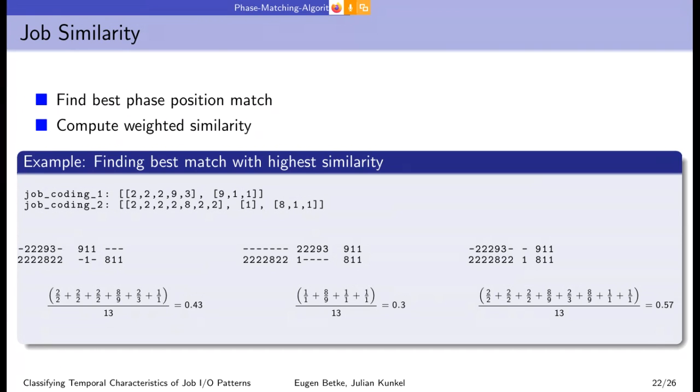We compute similarity for each combination and choose the highest one. In this case, this is the second combination. The exact formula of how we compute it's not really important, but important is that we have to do this sliding window approach and test all combinations, which is quite compute intensive.